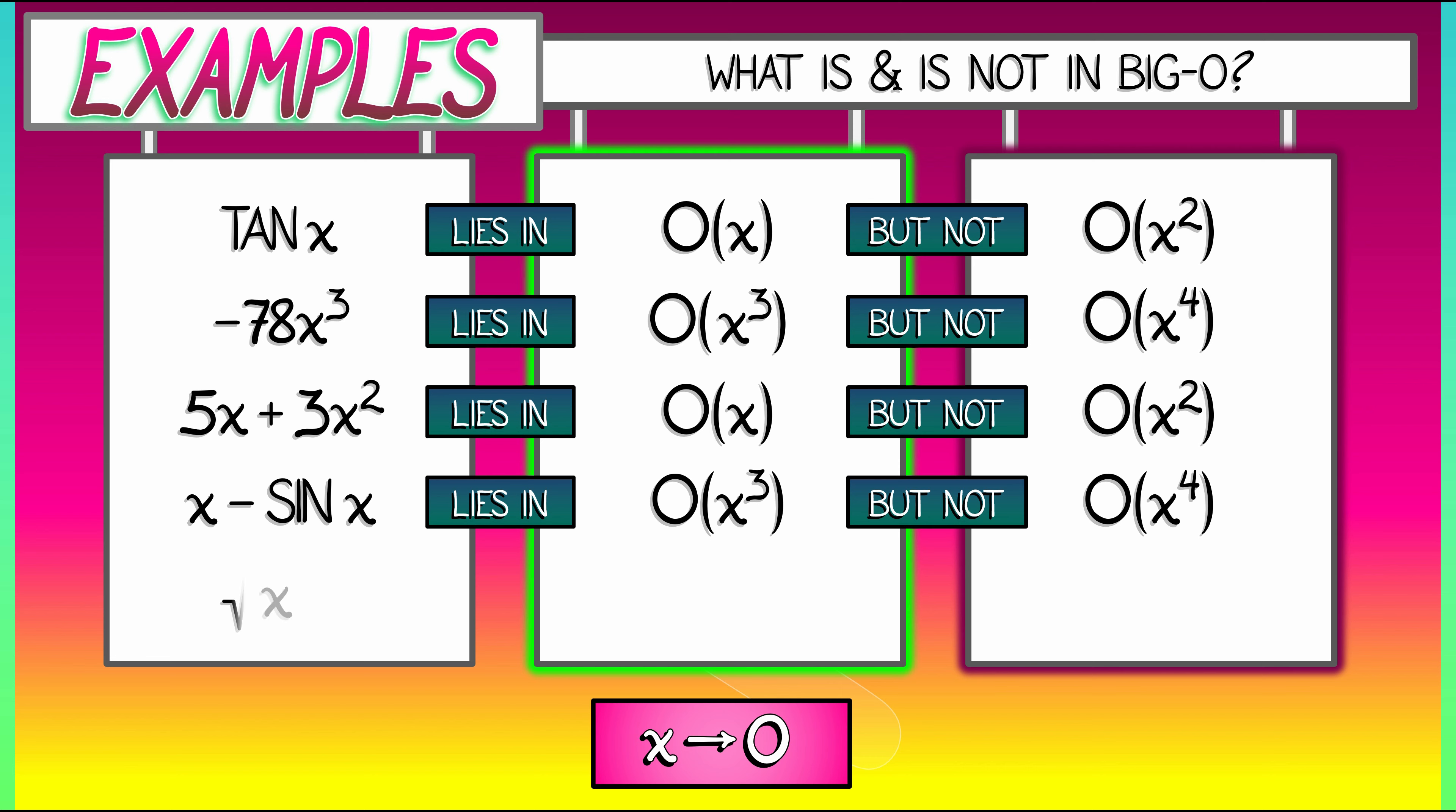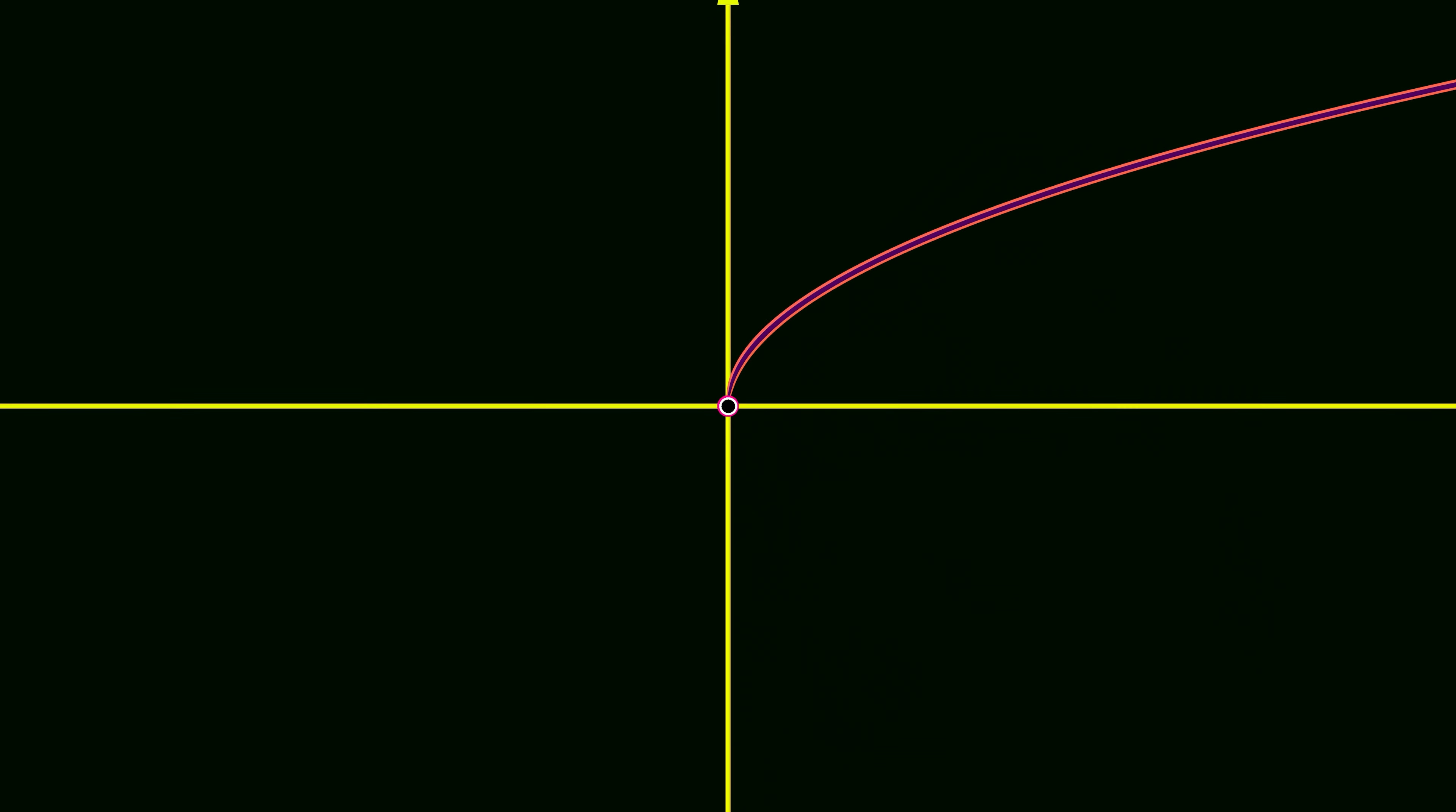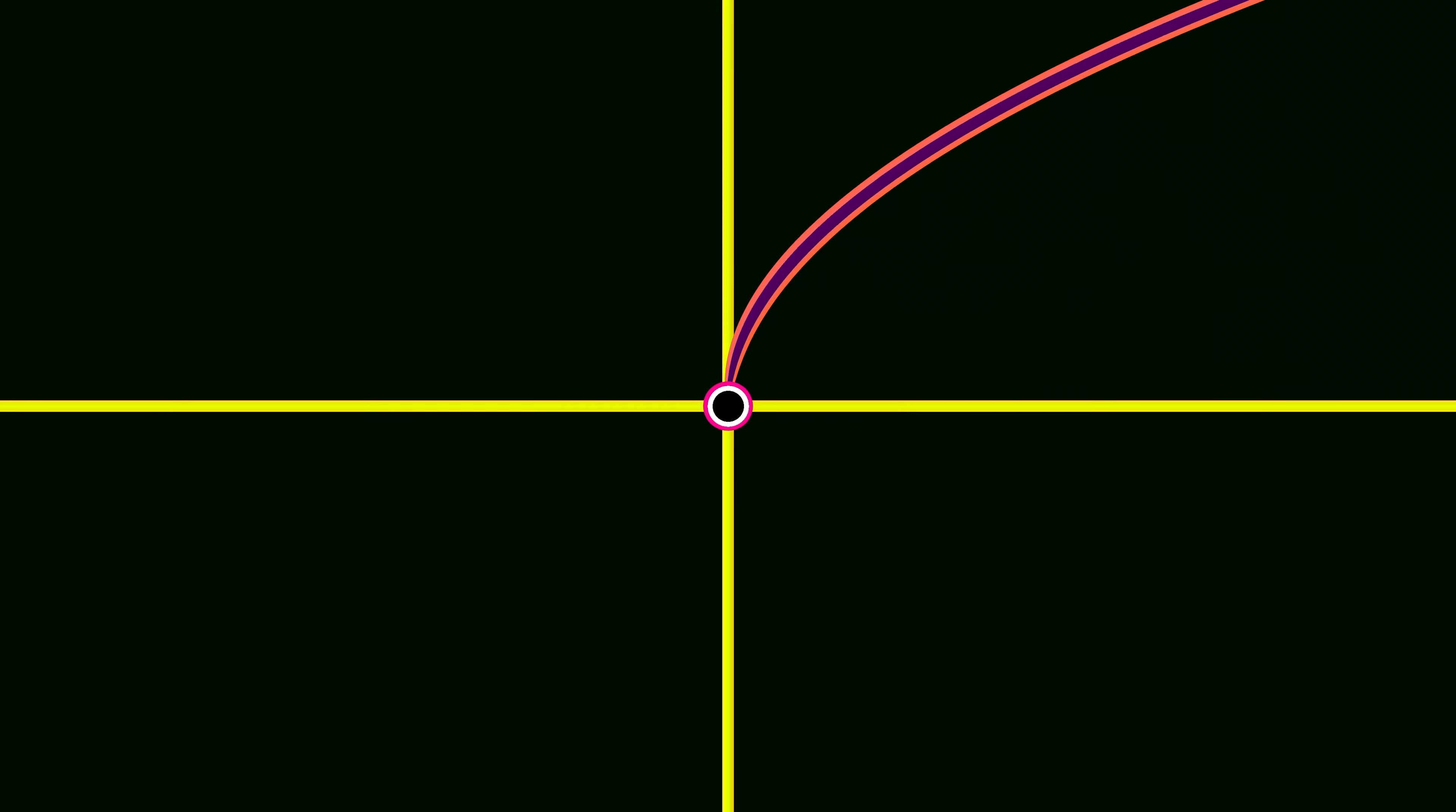And finally, let's consider the square root of x. That's an interesting one. That does not lie in big O of x, or x squared, or x cubed, or anything else. It does lie in big O of 1. What that means is that it is bounded by some constant. That square root of x, it does go to zero as x approaches zero from the right, but it stays big for a long time and then goes down to zero.